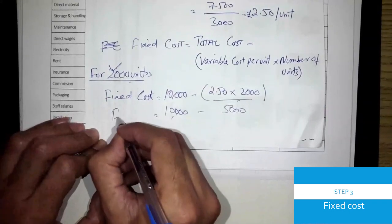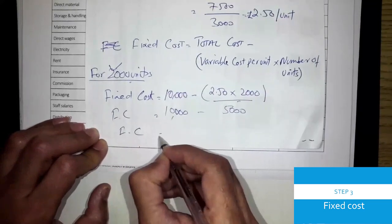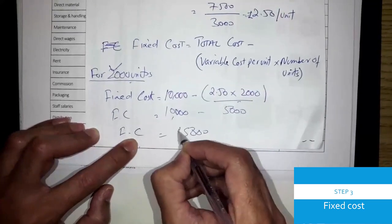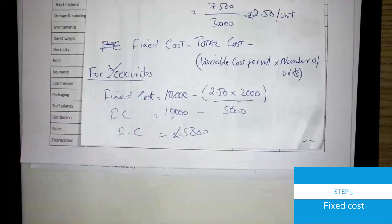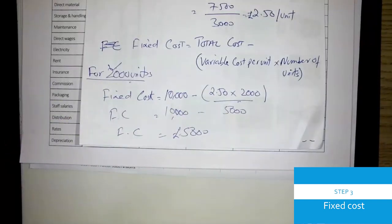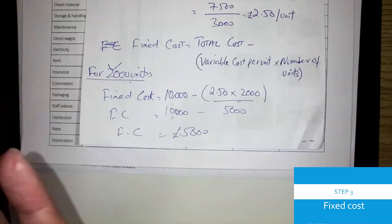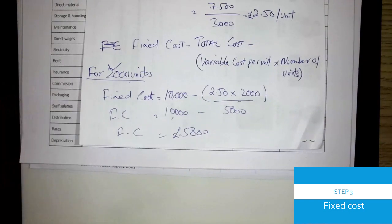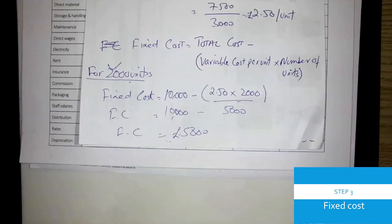If this is truly fixed, the result should be the same using the five thousand unit data. As a verification exercise, use the data for five thousand units and work out the fixed cost on your own piece of paper using the same method.